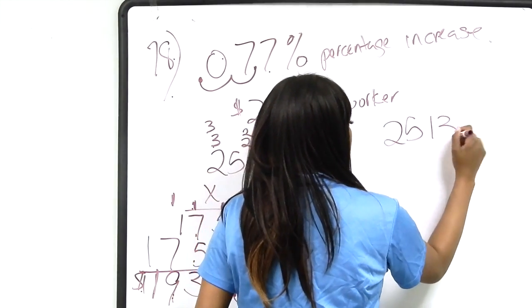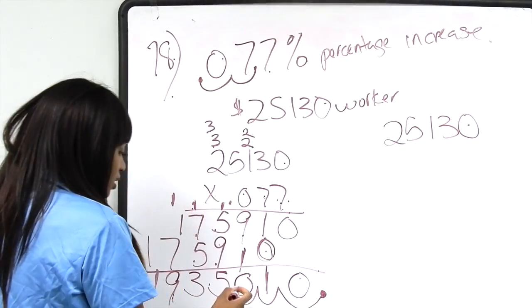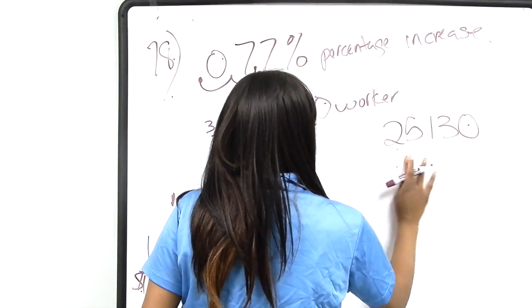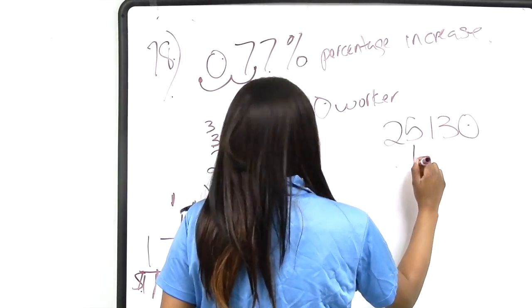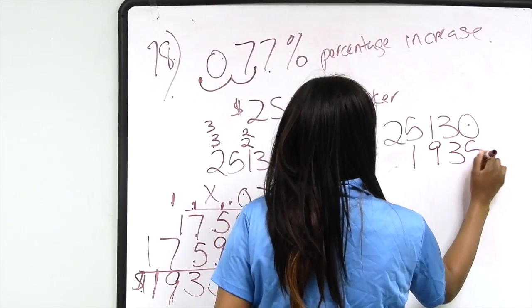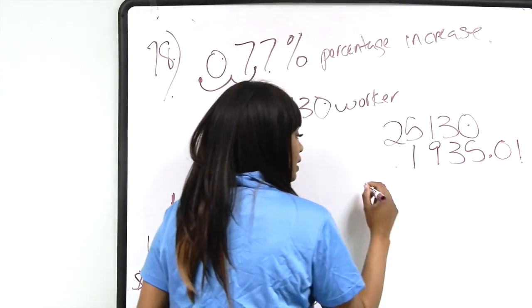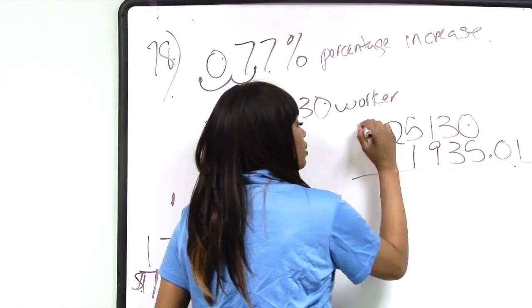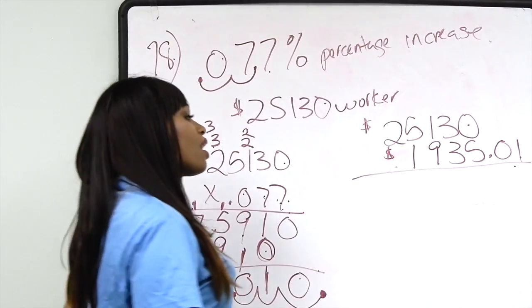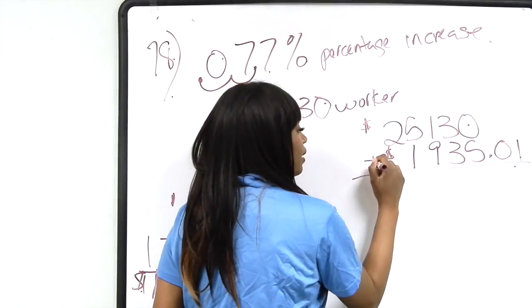$25,130 plus the rate of increase, which is $1,935.01. And we want to make sure we line this up correctly. Just like that. And we're just adding here.